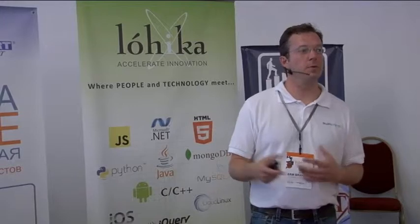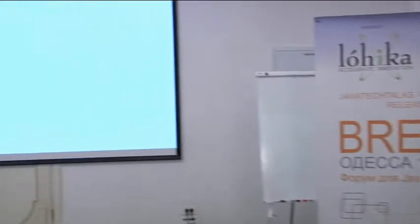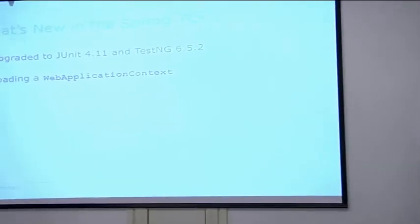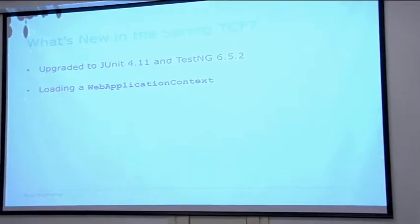What's new in the Test Context framework? First and foremost, there are upgrades to libraries now supported: JUnit 4.11 and TestNG 6.5.2, but you can still use older versions back to JUnit 4.5 and TestNG 6 something. One of the main features requested over many years that I finally implemented for Spring 3.2 is the ability to load a web application context.